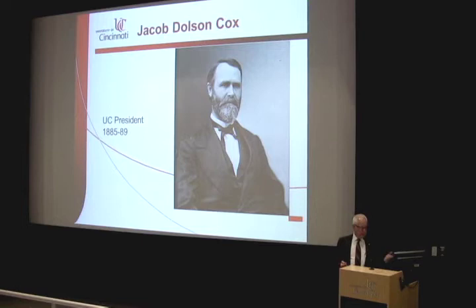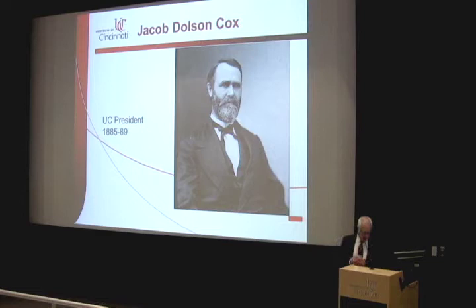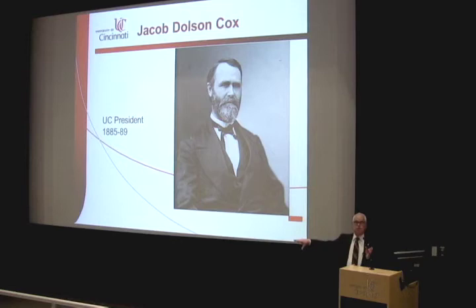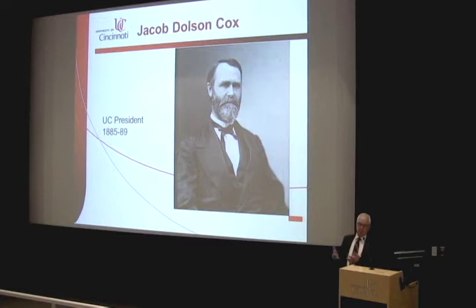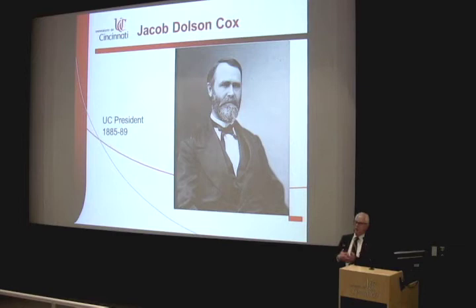Cox was the first person named president of the university. He was a decorated Civil War veteran, had already been governor of the state of Ohio, was a congressman, and was currently serving as dean of the Cincinnati Law School. He was also the father of eight children, which prepared him for a lot of what he ran into. Cox brought a calming influence to the university. He awarded UC's first doctoral degree, witnessed the birth of the university's athletics programs, and failed only in his attempt to consolidate all the educational trusts in the city — even though he was willing to bring the Catholics in.